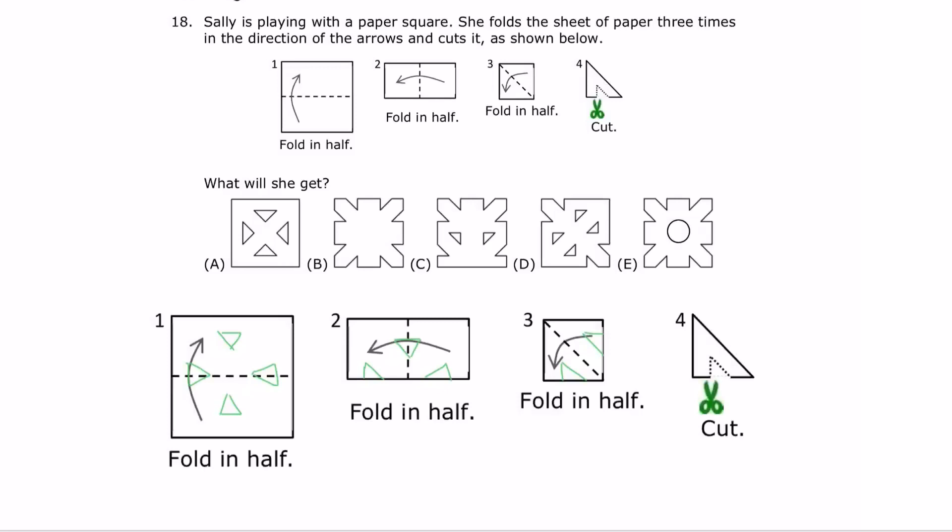Sally is playing with a paper square. She folds the sheet of paper three times in the direction of the arrows and cuts it, as shown below. What will she get?